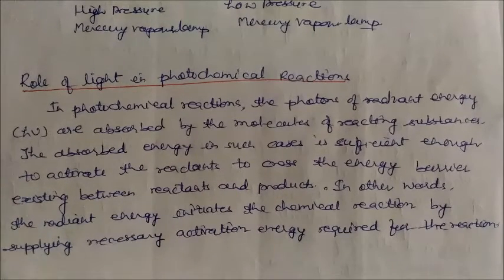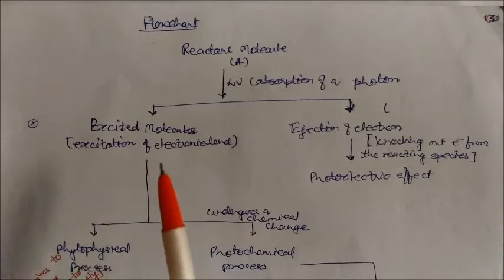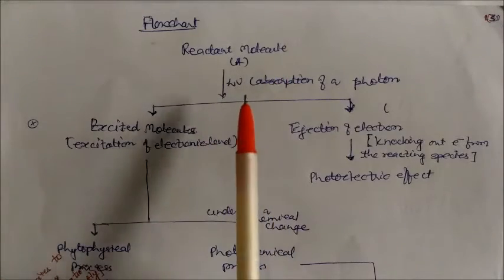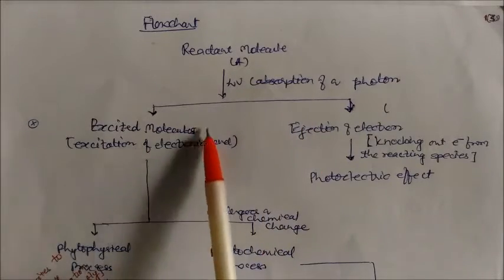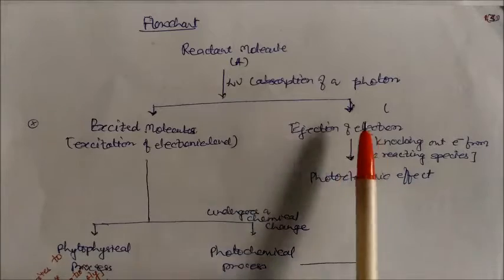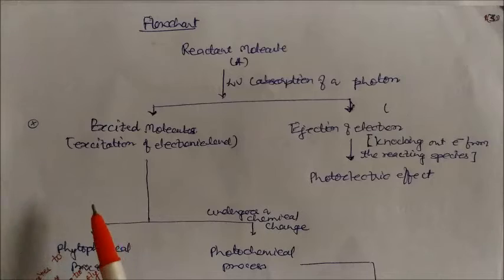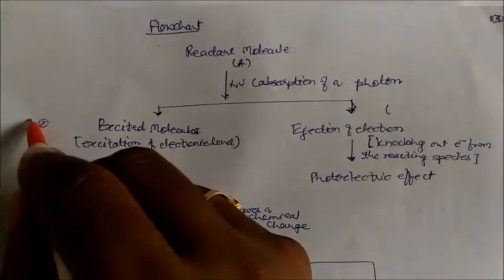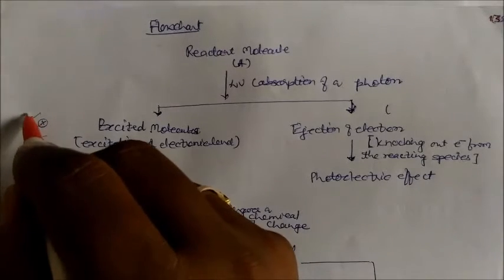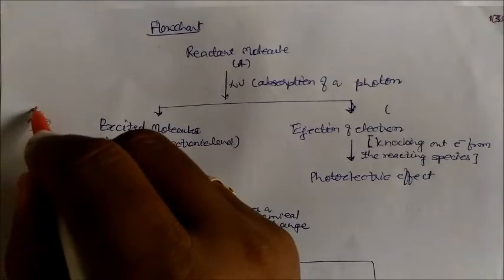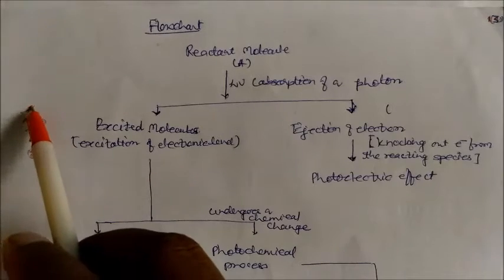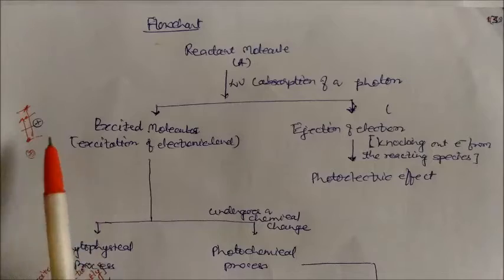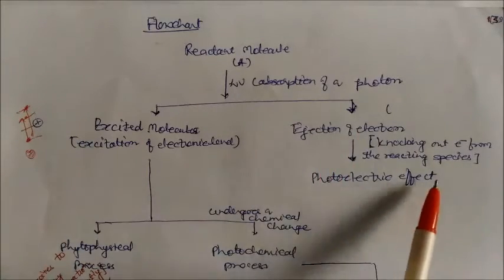I have drawn a flow chart showing how a reactant molecule undergoes photochemical reaction. After absorption of a photon, the reactant molecule divides into two paths: one is the excited molecule (excitation to an electronic level — the electron moves to a higher energy state), and the second is ejection of an electron from the reactant molecule, which is called the photoelectric effect.